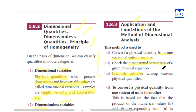The first application is to convert a physical quantity from one system of units to another — one system to another system. The second application is to check the dimensional correctness of an equation. And the third application is to establish a relation between various physical quantities.